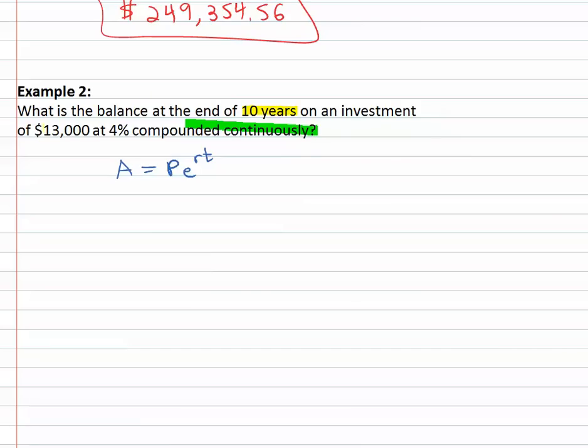So we need to know what to do with the ten years, the thirteen thousand dollars and the four percent. Well ten years that's the amount of time the investment's there for. Thirteen thousand dollars, that's what was invested at the present. And four percent is the interest rate, .04 is a decimal.